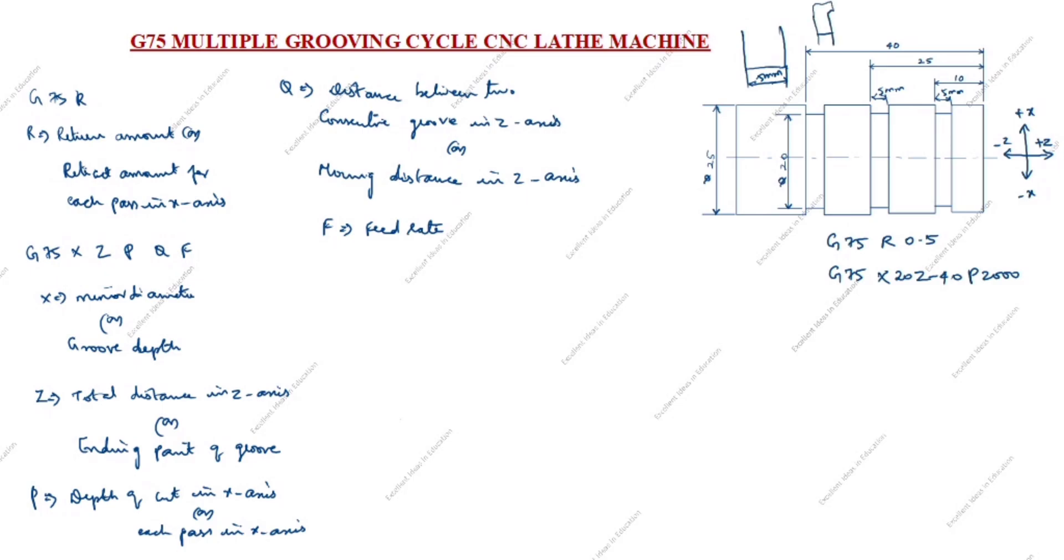We will take 5mm groove tool. So this groove tool is 5mm. We given 2000 microns, 2000 microns means 2mm. This groove depth is 2.5.